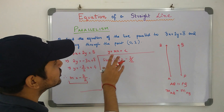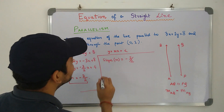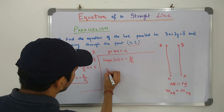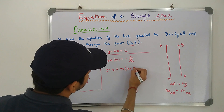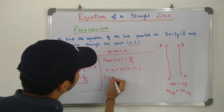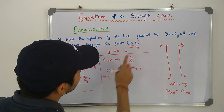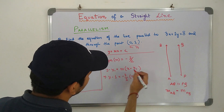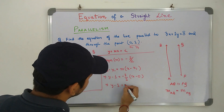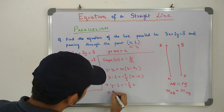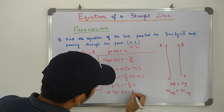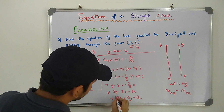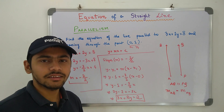Now we have to find the equation of the line. The slope is −3/2 and it passes through the point (0, 1). Using the one-point form y minus y1 equals m(x minus x1): y minus 1 equals −(3/2) into x minus 0. So y minus 1 equals −(3/2)x, therefore 2y minus 2 equals −3x, hence 3x + 2y = 2. This is the equation of the required line.